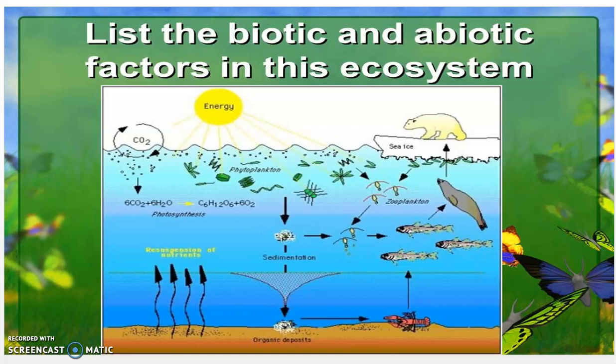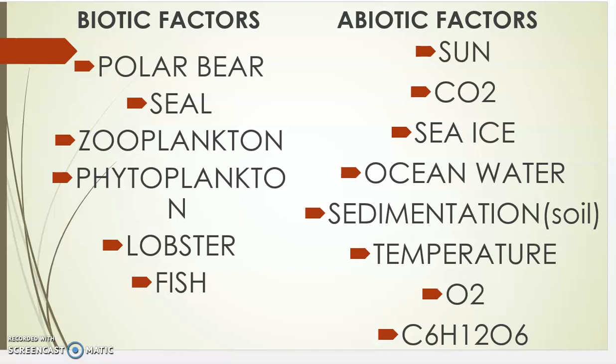Let's look at the t-chart. I'm going to show you the one that I made with what I've listed as biotic and abiotic factors. I want you to compare yours with mine. For biotic factors it was the polar bear, the seal, zooplankton, phytoplankton, lobster, and fish.